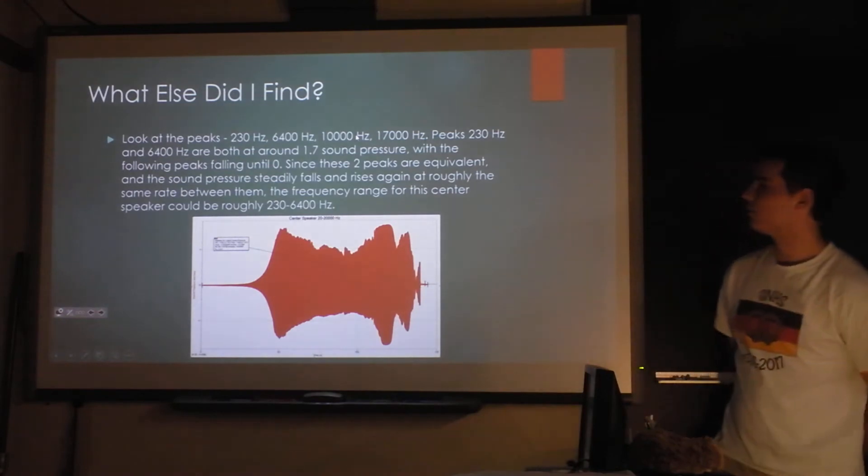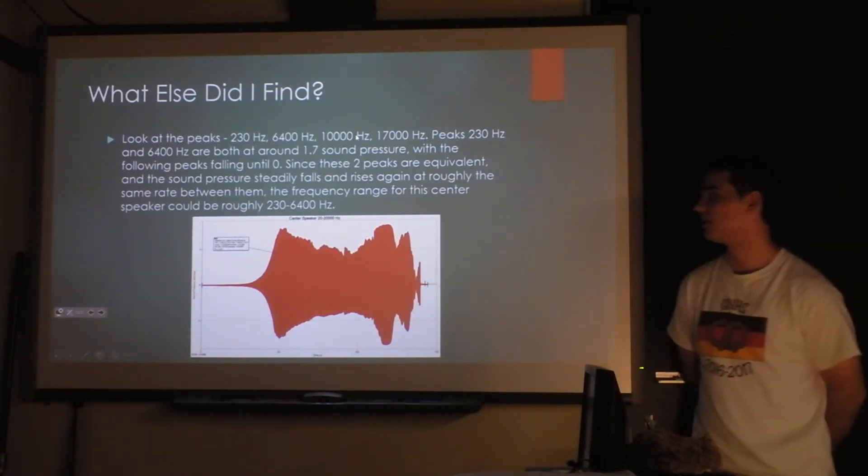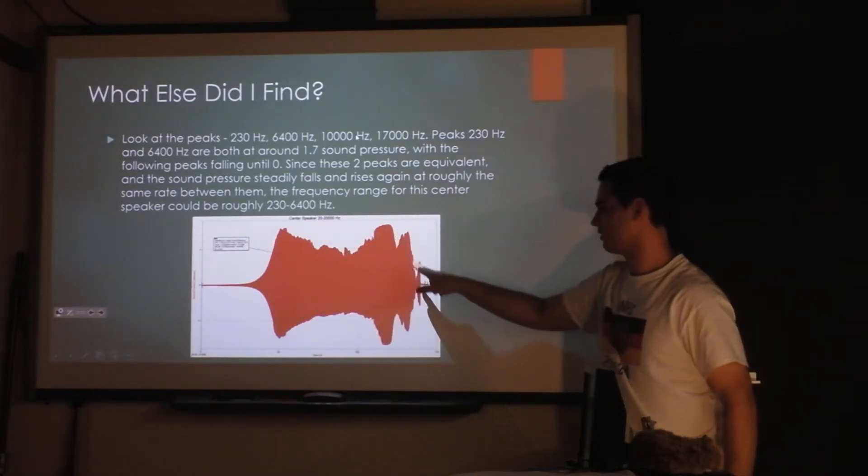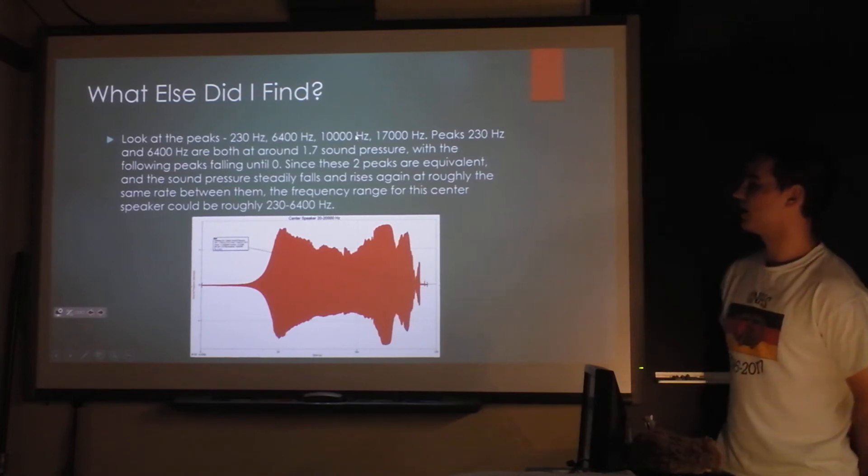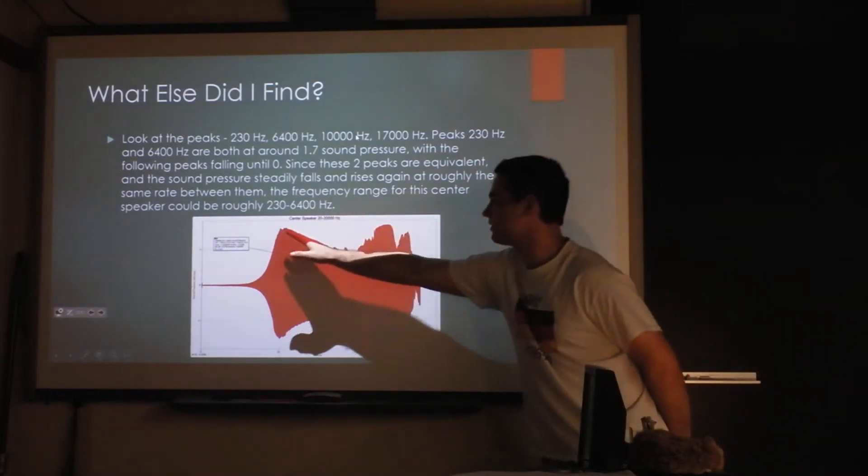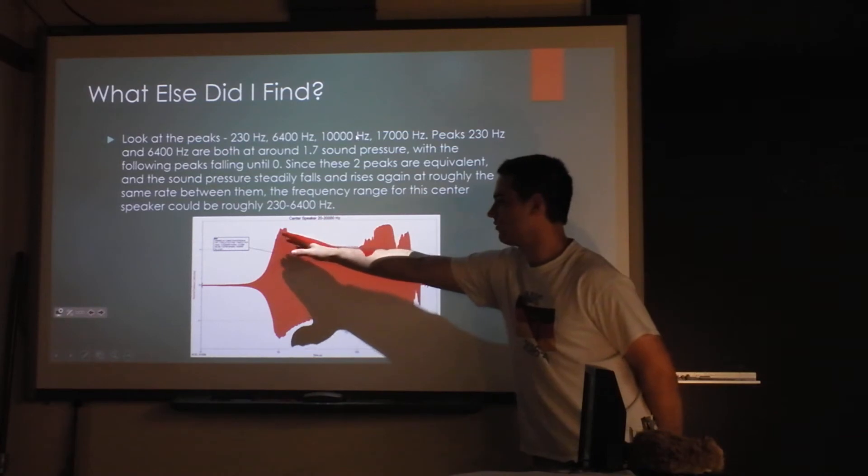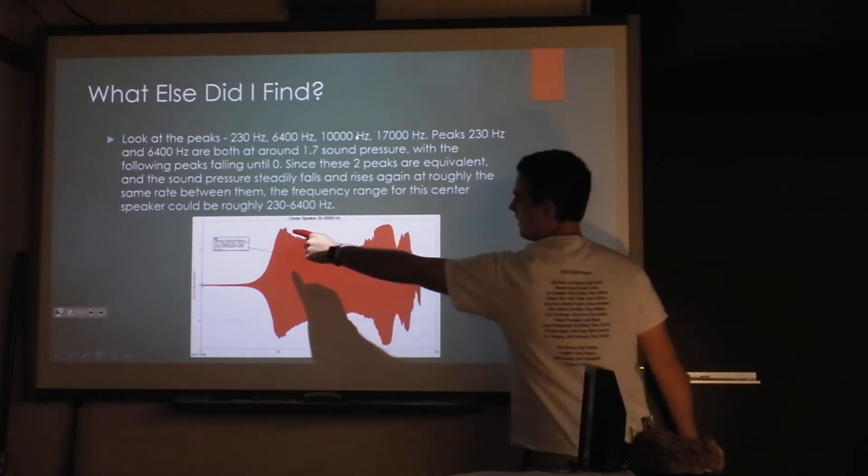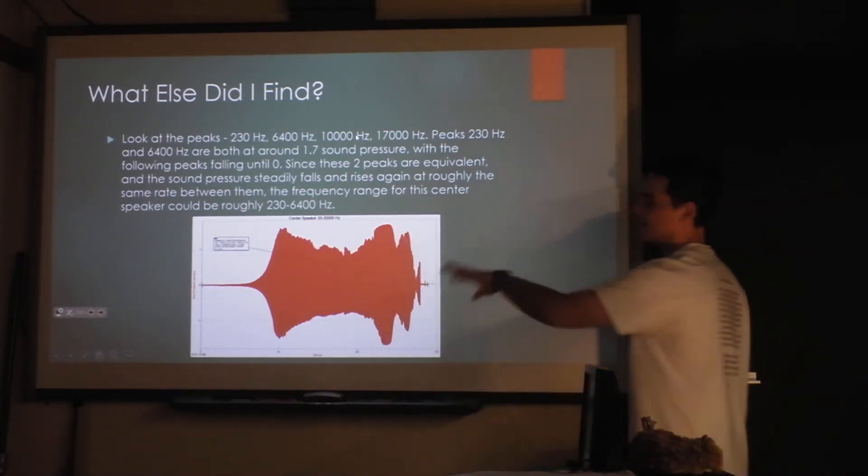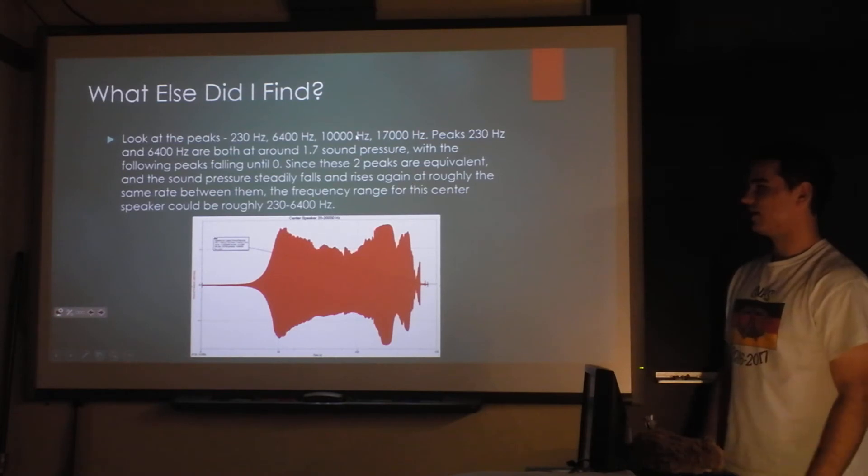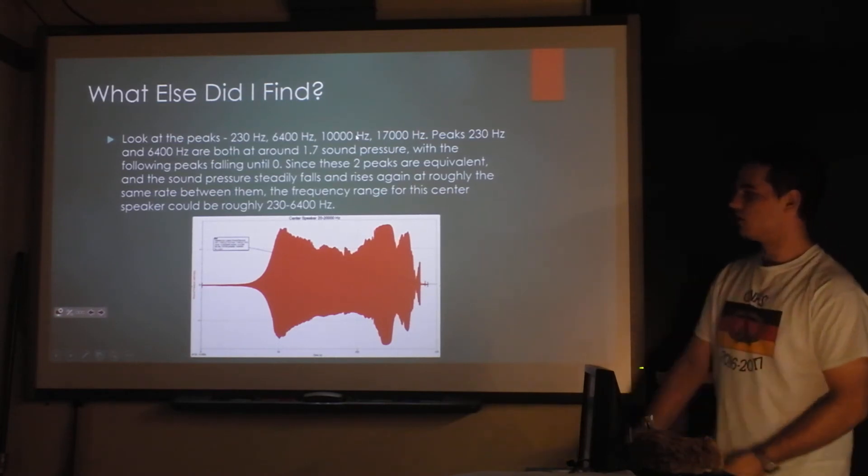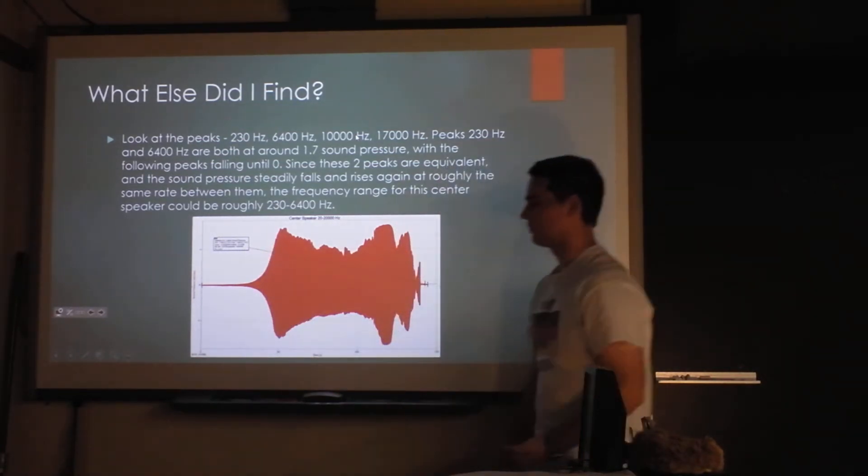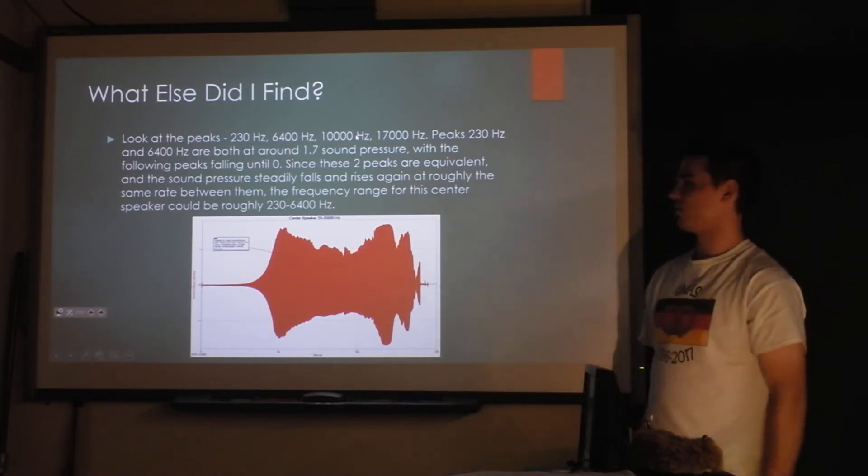The peaks were 230, 6,400, 10,000, 17,000. Those are here, here, here, here. And it kind of went down and went back up from here. And so this is what I concluded from this graph would be this speaker's optimal frequency range. Because this is a huge peak. It went down a little bit, and then came up and huge peaked again, and then kind of just fell down. So looking at that, not knowing a lot about sound at this time, I was like, well, if I just looked at this, I think that could be the optimal frequency range right there, and it seems pretty reasonable. It was 230 to 6,400 hertz.